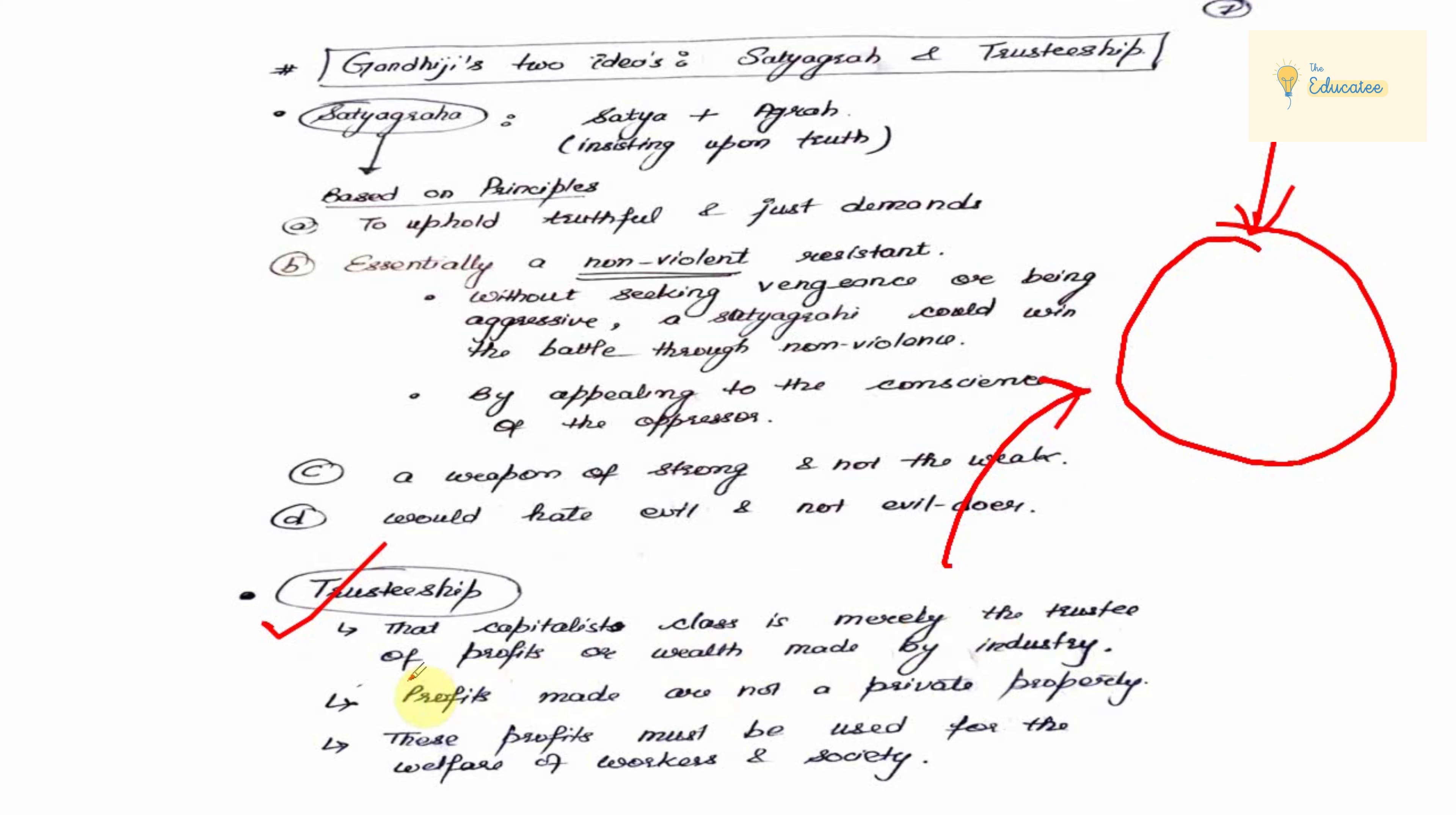So this capitalist class is trustee for profits. Profits are not a private property. These profits should be used in workers' welfare. Trusteeship means that the profits and capitalists are not a private property. Why? Because if workers have created everything and made their products useful, they can't do profit. So whatever wealth is, they have as trustee and that wealth should be used for the society.